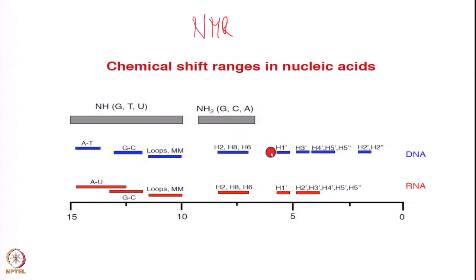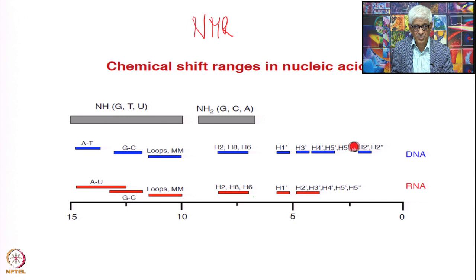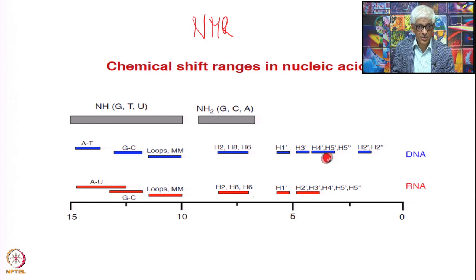Now, what are the protons we have? We have the sugar ring protons: 1', 2', 2'' for DNA, 3', 4', 5', and 5''. These are all part of the sugar ring. The 5' and 5'' lie outside in the backbone.